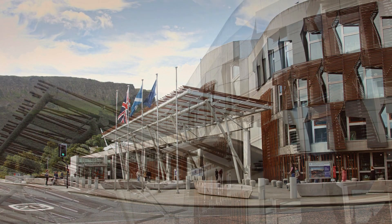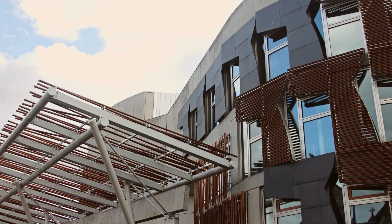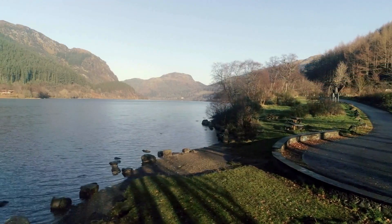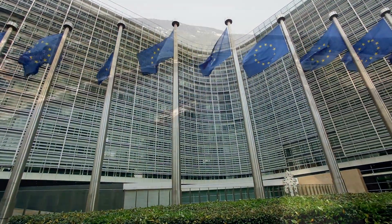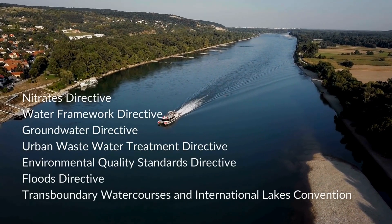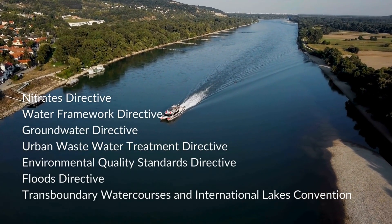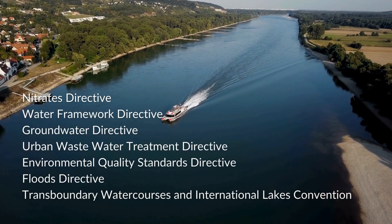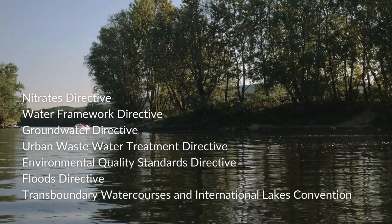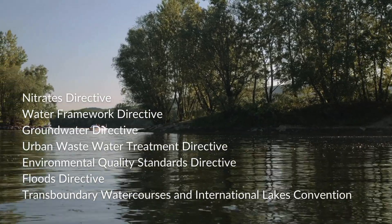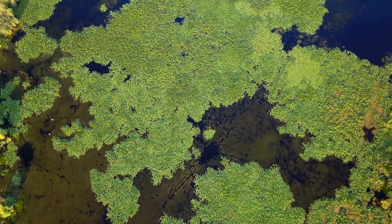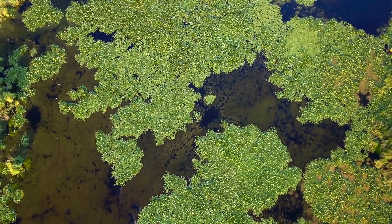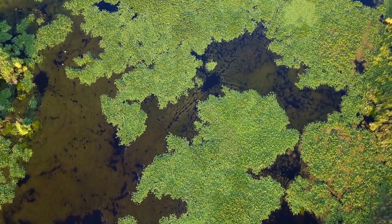Education and policy interventions constitute essential components of the strategy to combat eutrophication. Heightening public awareness about the causes and consequences of this phenomenon can foster more responsible practices in the use of fertilizers and detergents. Furthermore, the enactment of policies aimed at regulating nutrient runoff and promoting sustainable agricultural and aquacultural practices assumes a central role in averting the further exacerbation of eutrophication.